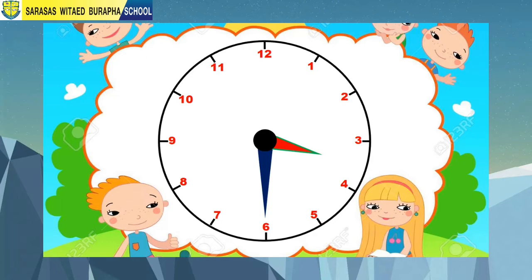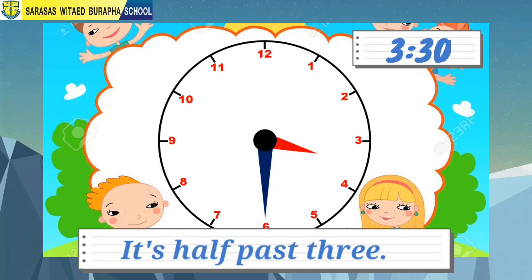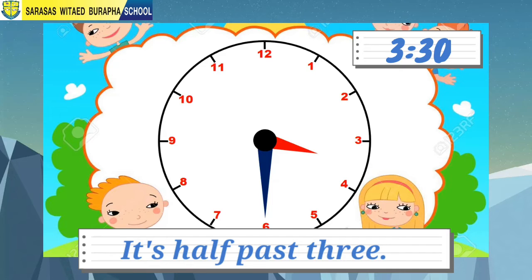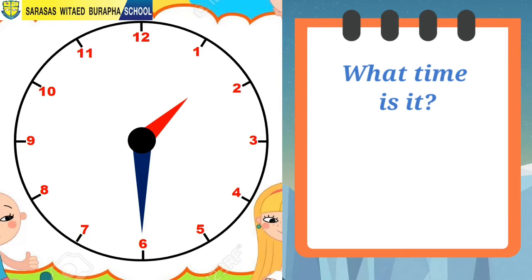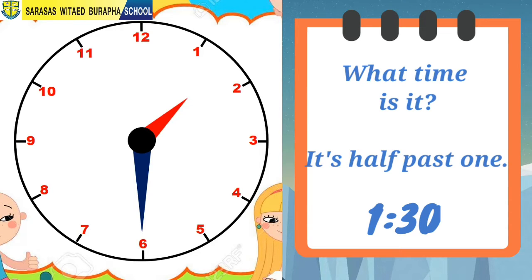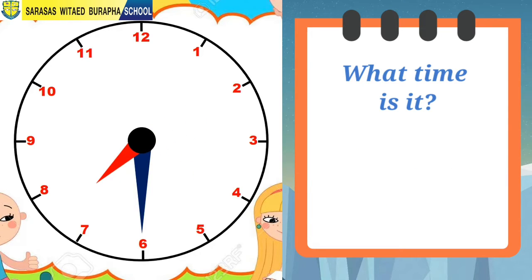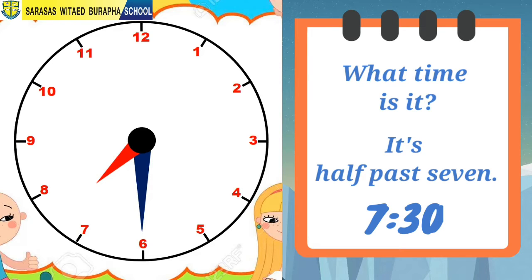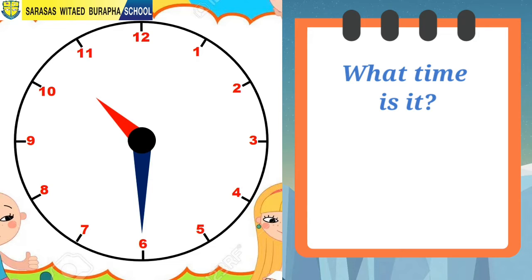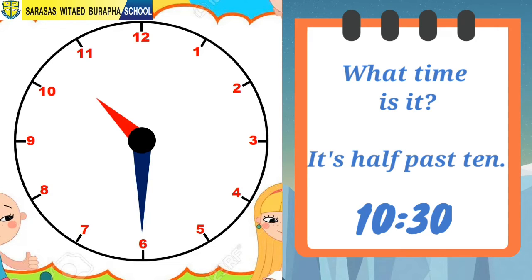The hour hand has passed 3, and the minute hand is pointing on 6. The time is 3:30, or half past 3. Can you tell what time it is? Did you say 1:30, or half past 1? Then you are correct. How about this? Did you say 7:30, or half past 7? Then you are right. And now — did you say 10:30, or half past 10? Well done, you got it!